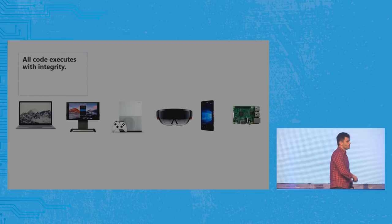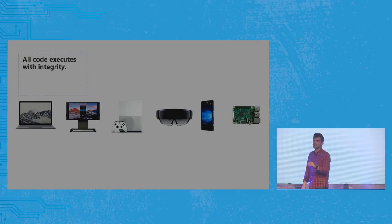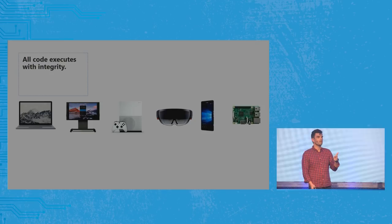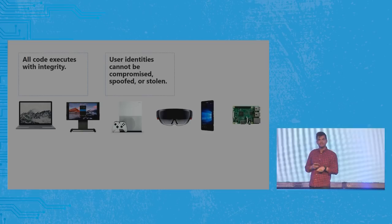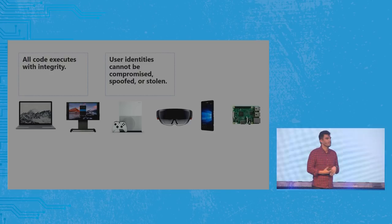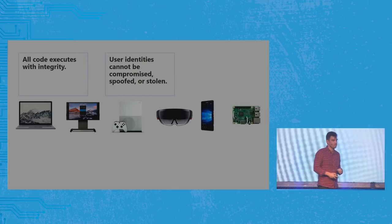The first security promise — which we aspire to make but will take some time — is that all code executes with integrity: we enforce code signing everywhere and enforce forward and rearward control flow integrity at runtime. The second promise — and this will be a tough one — is using secure biometrics and multi-factor authentication to make credential theft a thing of the past, especially with hardware segmentation and isolation.